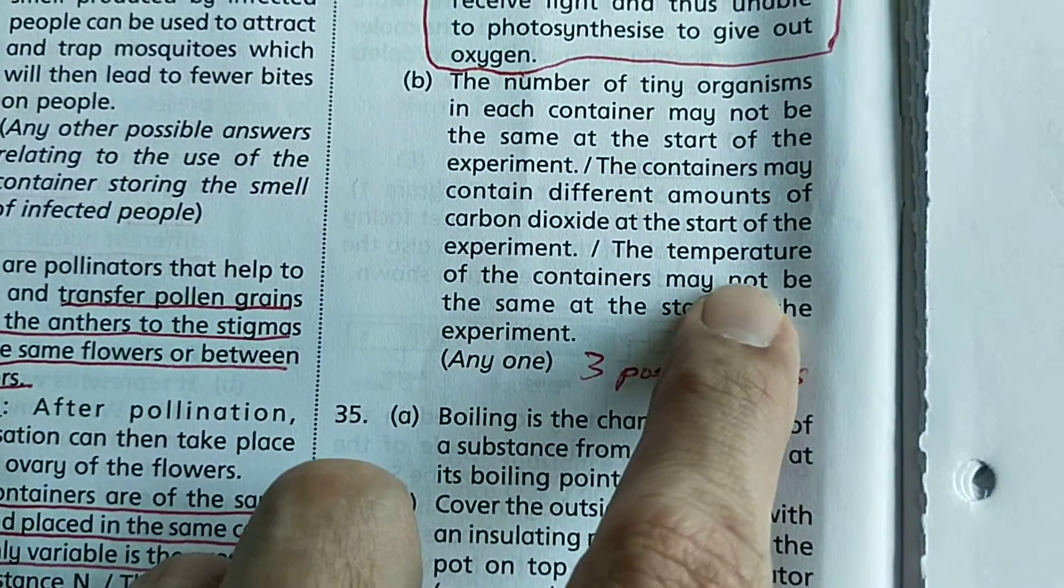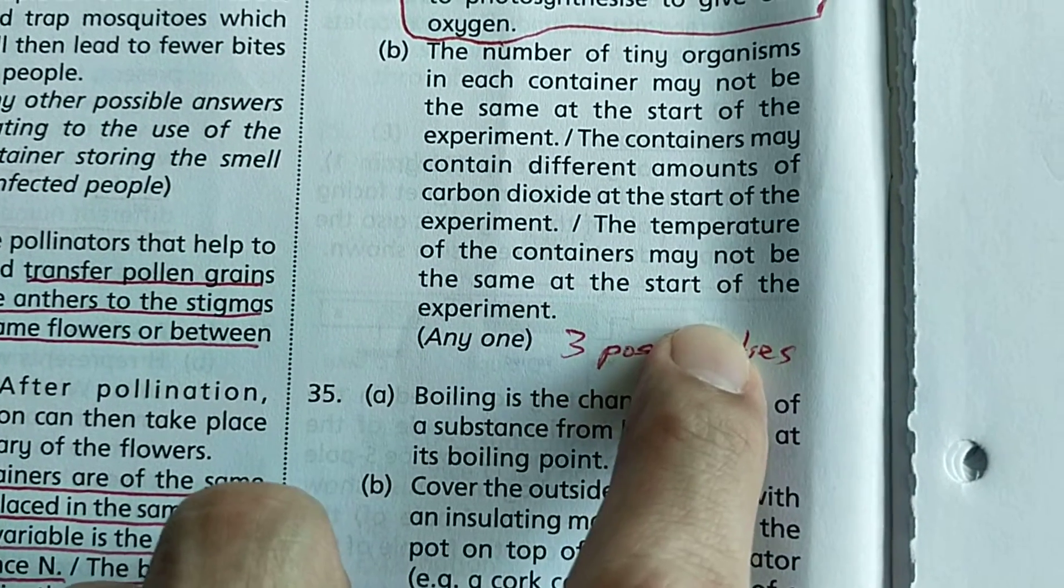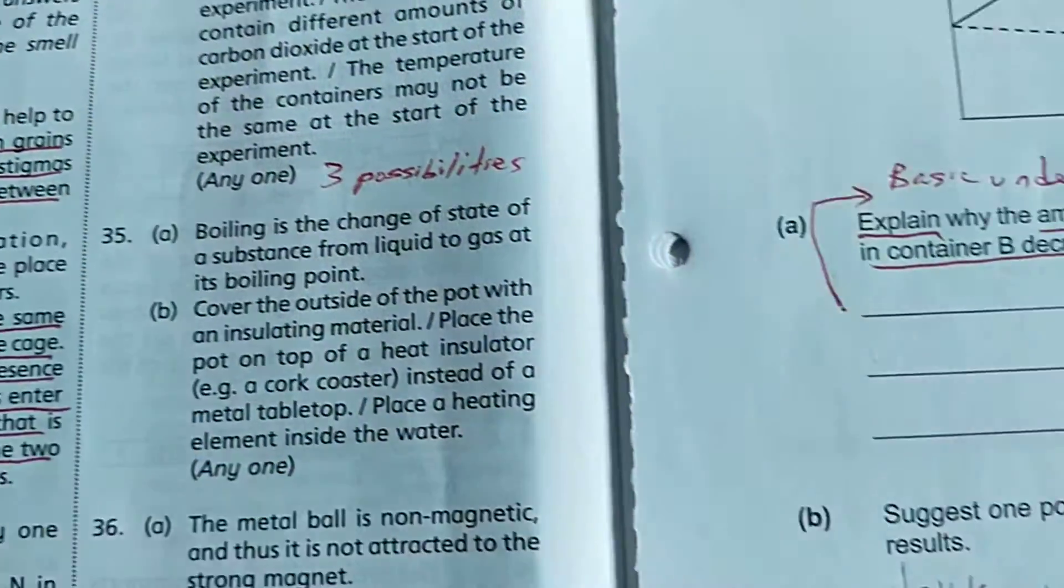The student needs to know that the rate of photosynthesis is affected by the amount of carbon dioxide. And finally, the temperature of the containers may not be the same at the start of the experiment. So there are three possibilities.